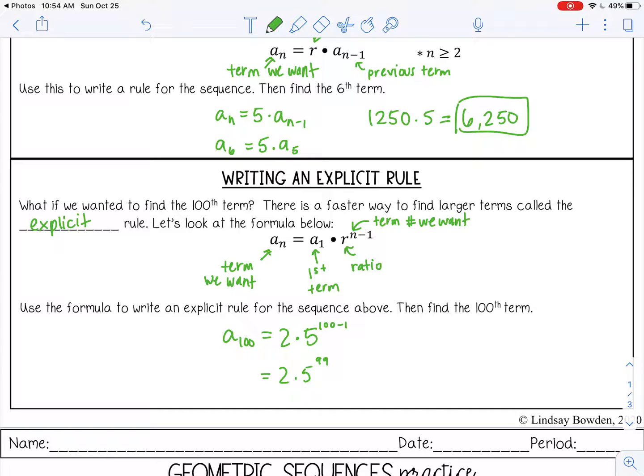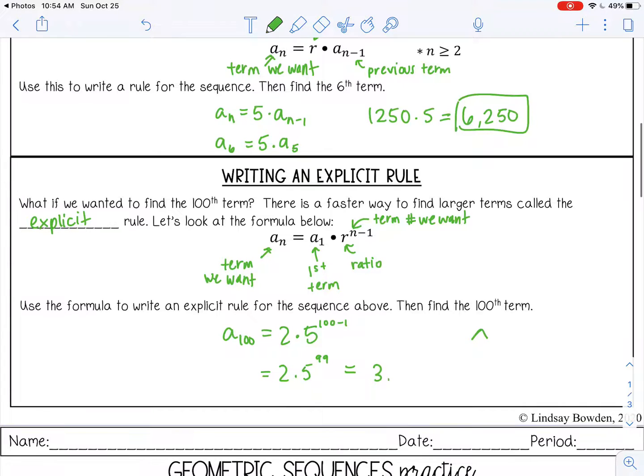2 times 5. Remember, you can use the caret key to make an exponent in your calculator to the 99th power. Now, yes, it's going to be a huge number because if we keep multiplying by 5 each time, it's going to grow very fast. It's going to grow exponentially, in fact, which we're going to talk about soon. So this is 3.15 times 10 to the 69th power. And it's such a large number, we're going to keep it like that. All right, you can go ahead and stop this video and complete your practice.